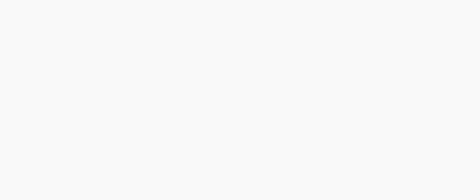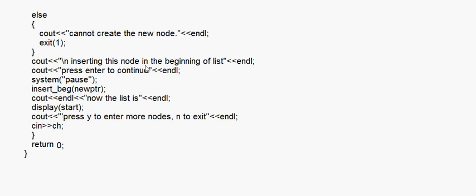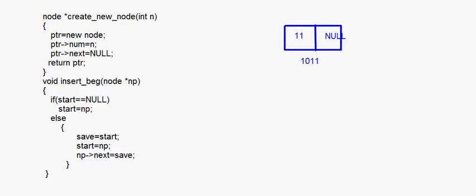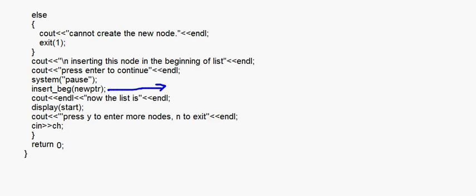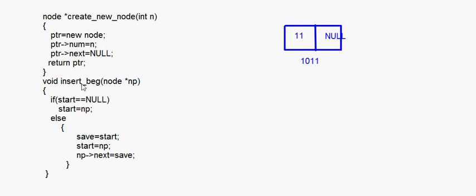The node has been created but this separate node has no link yet — we have to make a linked list. So here we call: insertBeginning(new_ptr). What does new_ptr contain? 1011. This is the call to the function insertBeginning. Inside: void insertBeginning(node pointer np) — np now contains 1011, passed from new_ptr.